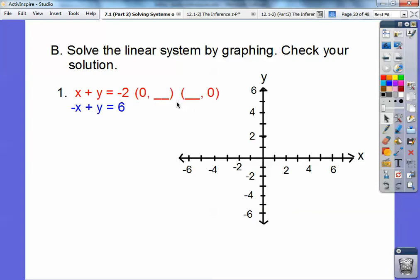All right, so I'm going to do the intercept method. So when x equals 0, it gets rid of this x. And so we're left with y equals negative 2. Okay, so there it is right there. Y equals negative 2. And then when y equals 0, x is going to equal negative 2. So there it is right there. Connect them up.